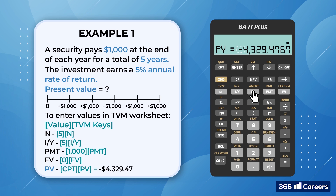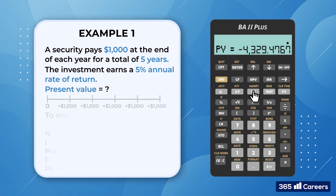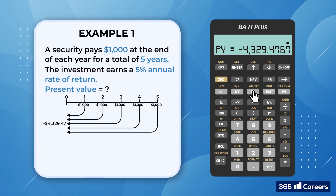Please pay attention to the negative sign. It doesn't mean we have done something wrong — it's just how the calculator works. The number is negative because it's a cash outflow. So to purchase a security paying $1,000 per year for the next 5 years, John must pay $4,329 today. As a rule of thumb, make sure that you enter cash inflows with a positive and cash outflows with a negative sign.